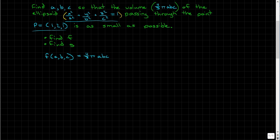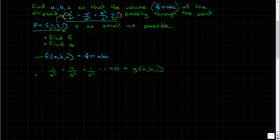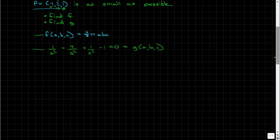To find g, we take the x, y, and z values of point p and plug them into the ellipsoid equation. Plugging in x=1, y=2, z=1, we get 1/a² + 4/b² + 1/c². Since this equals 1, we equate the constraint to 0: g(a, b, c) = 1/a² + 4/b² + 1/c² − 1 = 0. It's now a function of a, b, and c since we've eliminated x, y, and z.